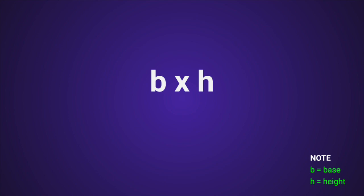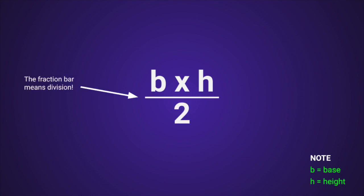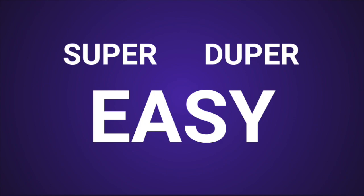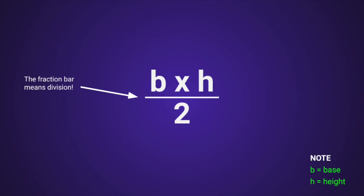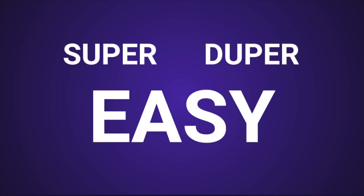BASE TIMES HEIGHT DIVIDE BY TWO — these two steps are all you've gotta do for you to find the answer, you see. Cause areas of triangles are super duper easy.